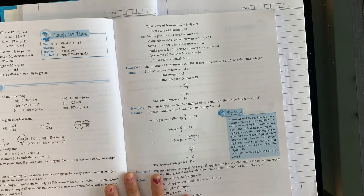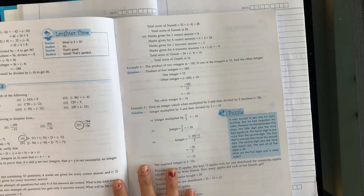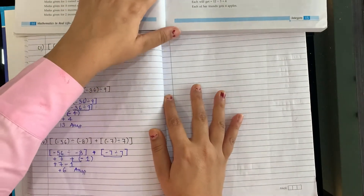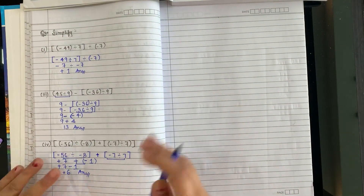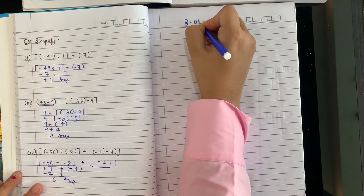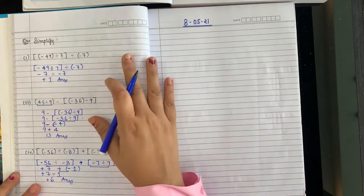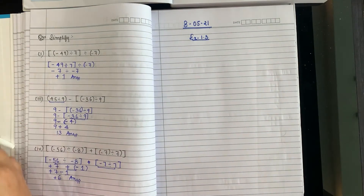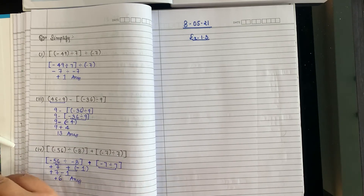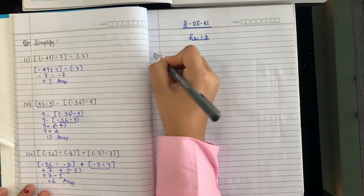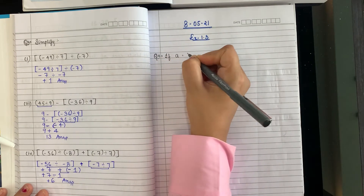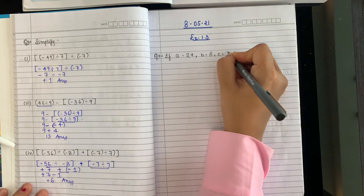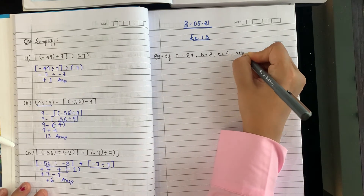We are almost at the finishing point. Let's start Question 4 today — yesterday we had done up to Question 3. Keep your book in front of you and note down the question. First of all, write down today's date: 8th of May. Exercise 1.3 — take your black gel pen and write down Question 4: if a = 24, b = 8, c = 4, verify that a ÷ (b + c) is not equal to a ÷ b + a ÷ c.